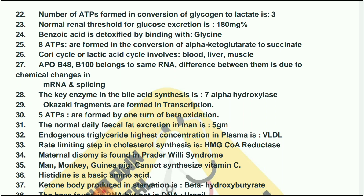The number of ATPs formed in conversion of glycogen to lactate is three. Normal renal threshold for glucose excretion is 180 mg percent. Benzoic acid is detoxified by binding with glycine. Eight ATPs are formed in the conversion of alpha-ketoglutarate to succinate.